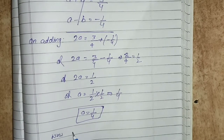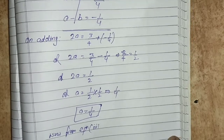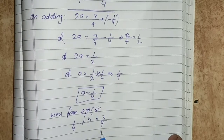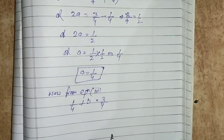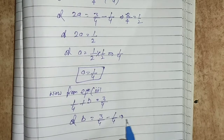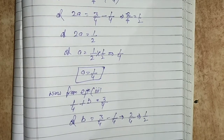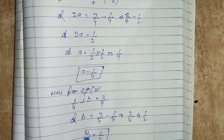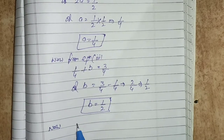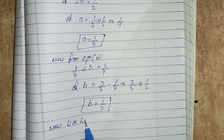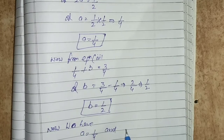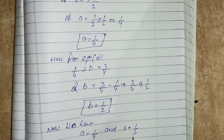From equation 3: a plus b equals to 3 by 4. Substituting a equals 1 by 4: 1 by 4 plus b equals to 3 by 4. So b equals to 3 by 4 minus 1 by 4, which is 2 by 4, or 1 by 2. We have a equals 1 by 4 and b equals 1 by 2.